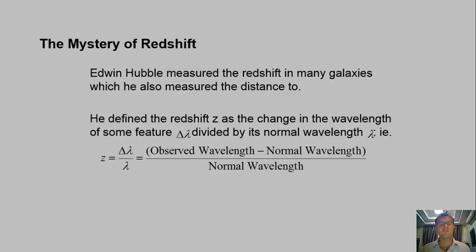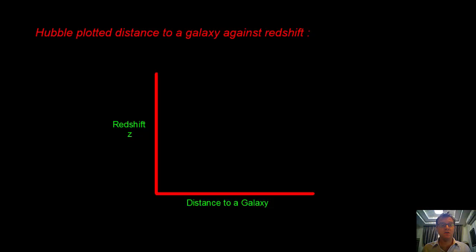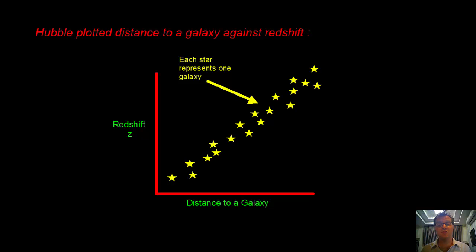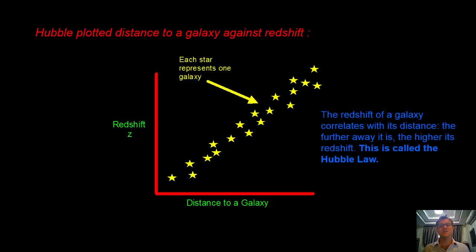And what he did is he plotted redshift against the distance, and he found something interesting. When he plotted these two features, he found that, as shown with each star representing a galaxy, there was a clear linear correlation. So the redshift of a galaxy correlates to its distance. The further away is the higher the redshift, and this became known as Hubble's law.